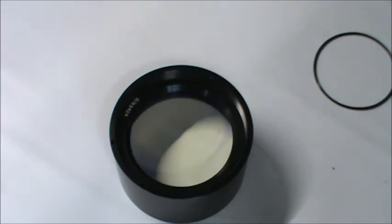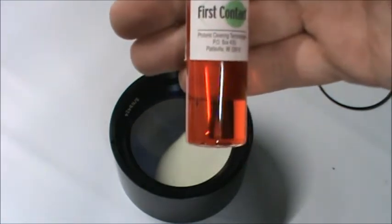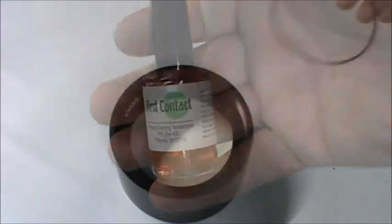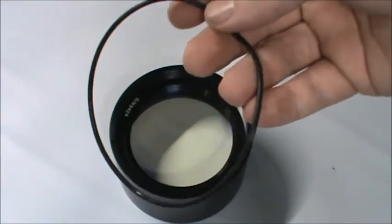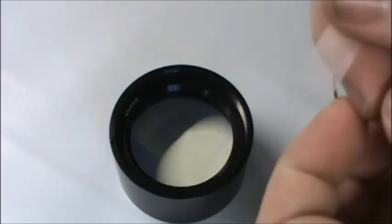By no-touch, we mean that only the cleaning product ever comes in contact with the optic. To do so, we will be using our first contact red polymer, an o-ring that we have made to the lens size, and our chemically inert mesh strip. Everything we use is available on our website in the description below.